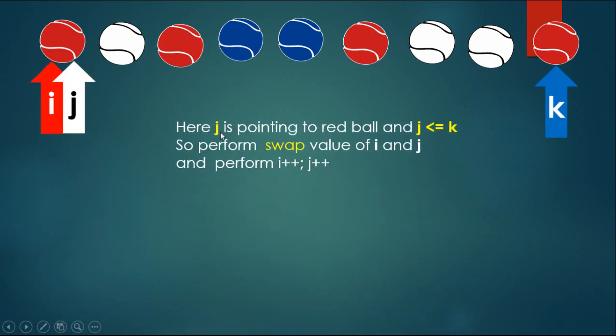Here j is pointing to a red ball and j less than or equal to k, so perform swap of value of i and j, and perform i++, j++.